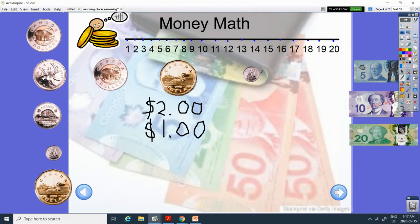And this one, smallest coin. Got a boat on it. Its name is the dime. It's $0.10.